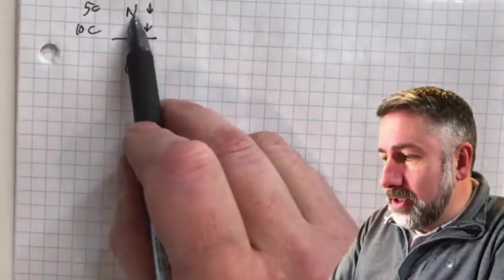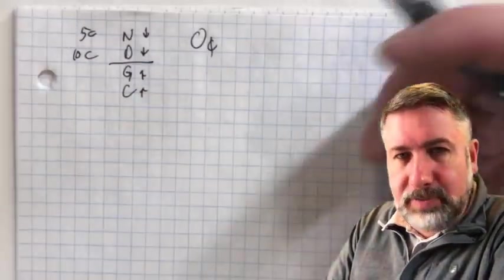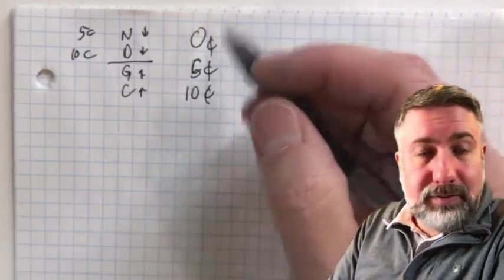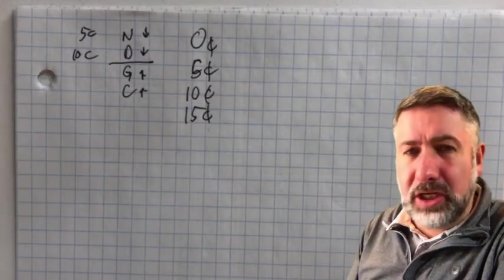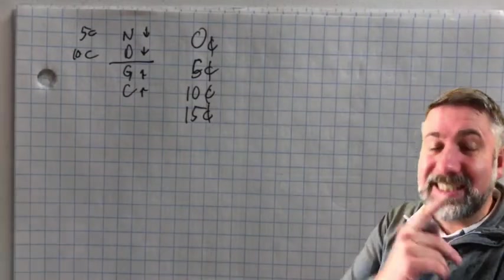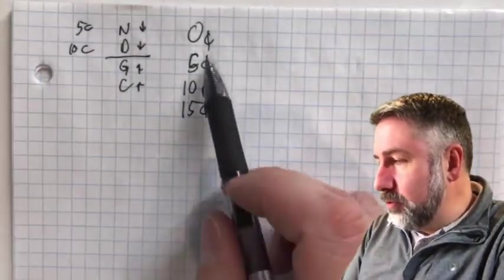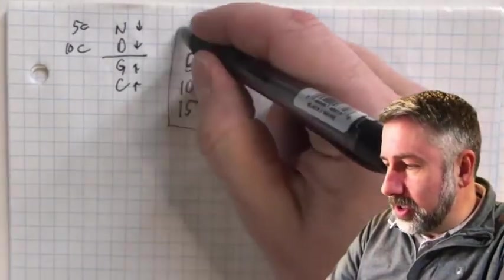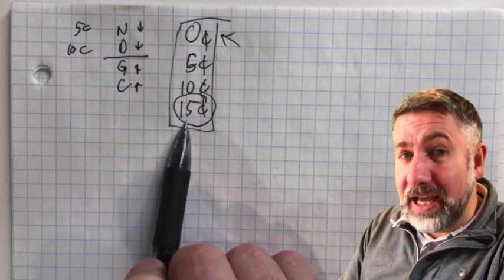Since the machine can receive nickels and dimes, the possible amounts are: no money (machine just started or just dispensed a gumball), five cents (one nickel), ten cents (one dime), and fifteen cents (a dime and a nickel). You could keep going — any multiple of five cents is a possible state — except that value is removed when the machine dispenses a gumball and returns to the zero state.